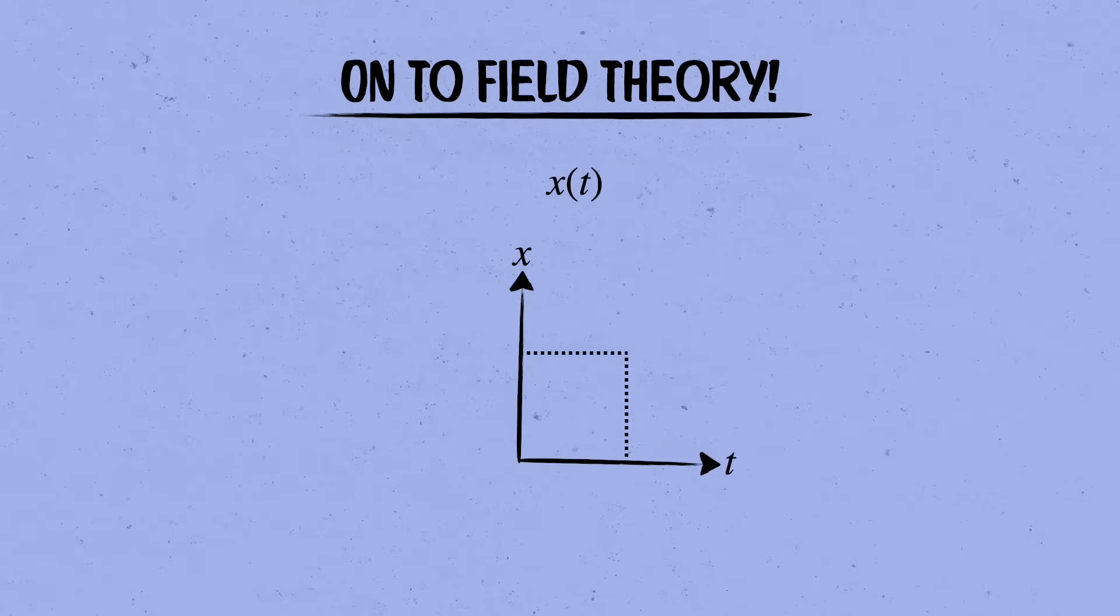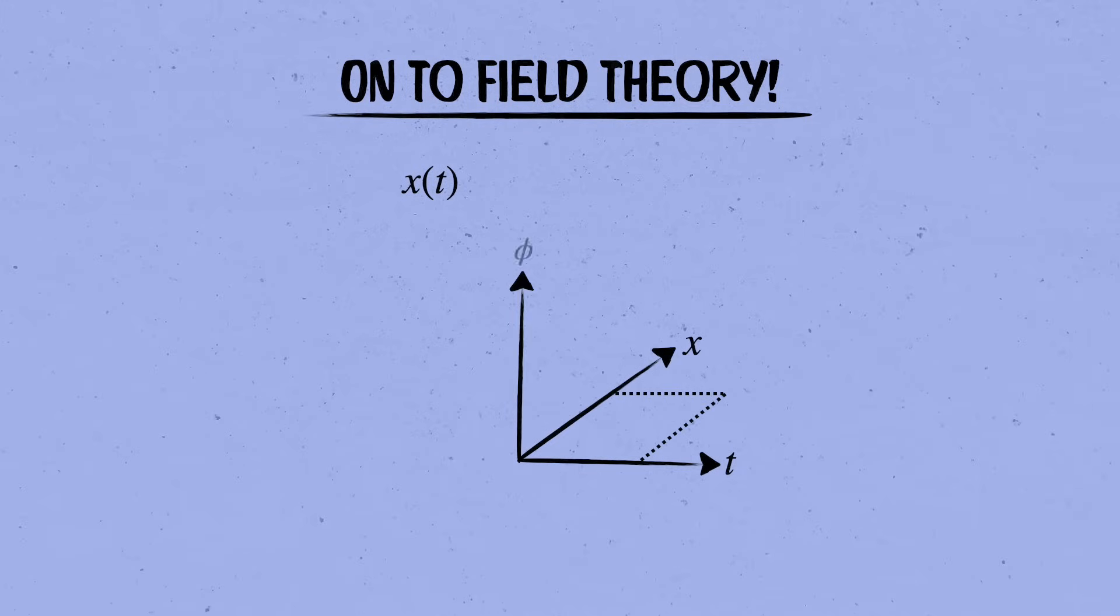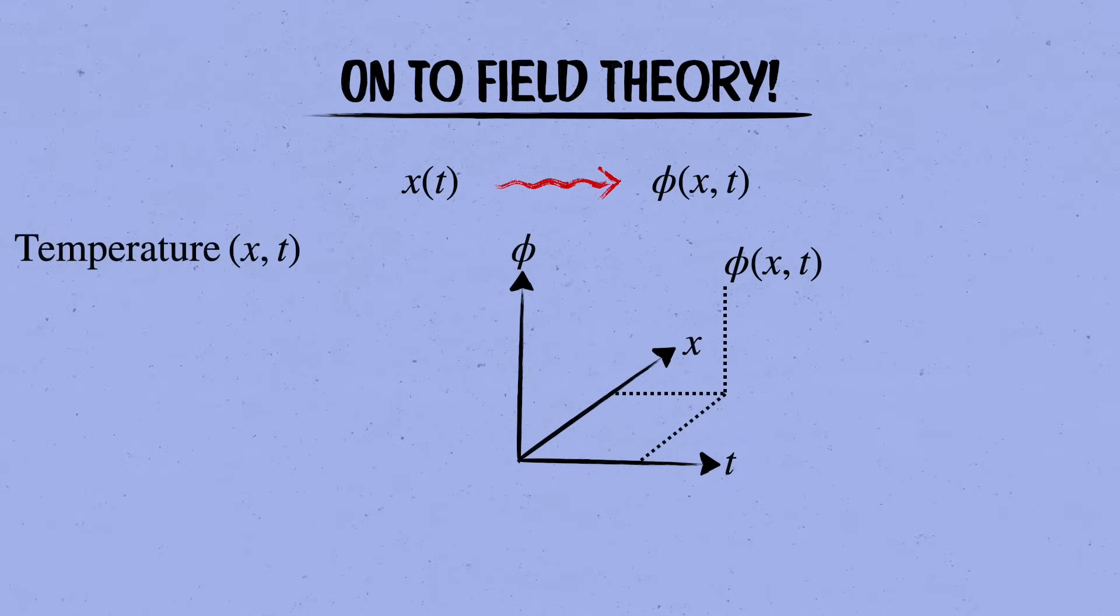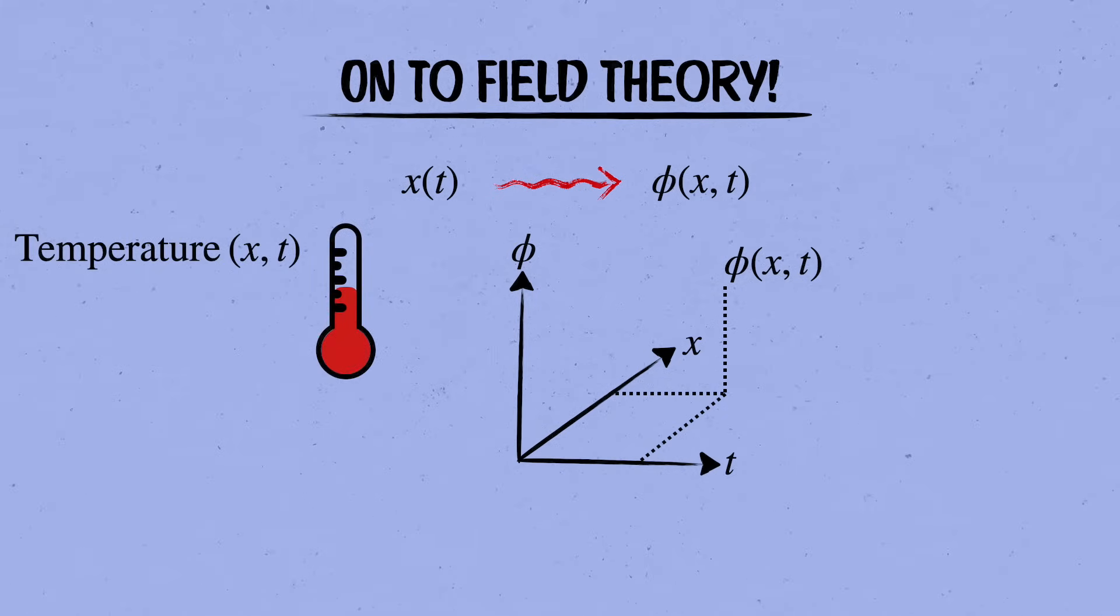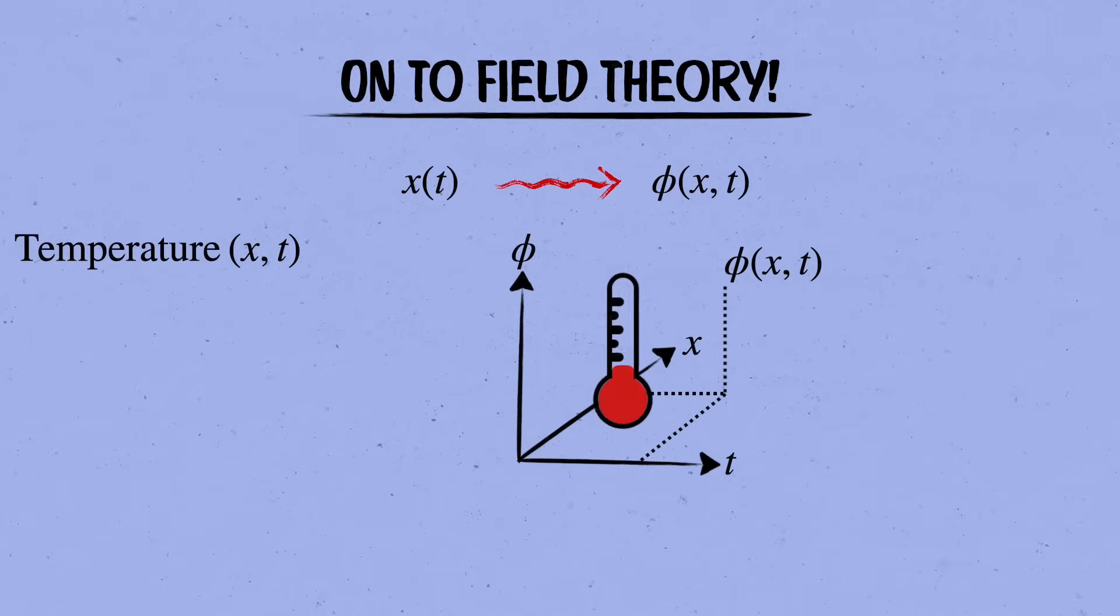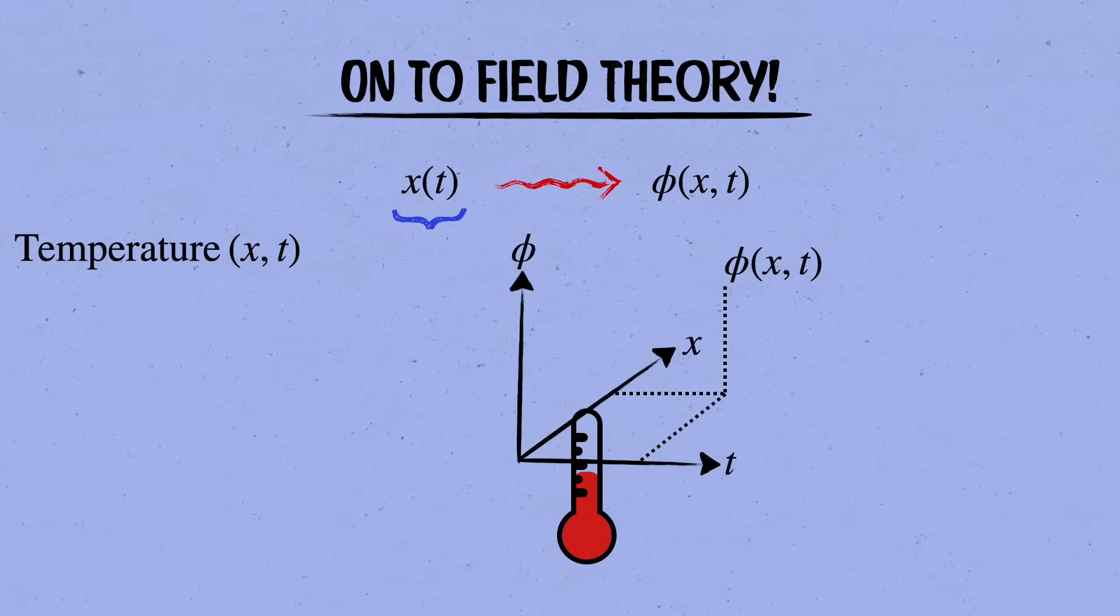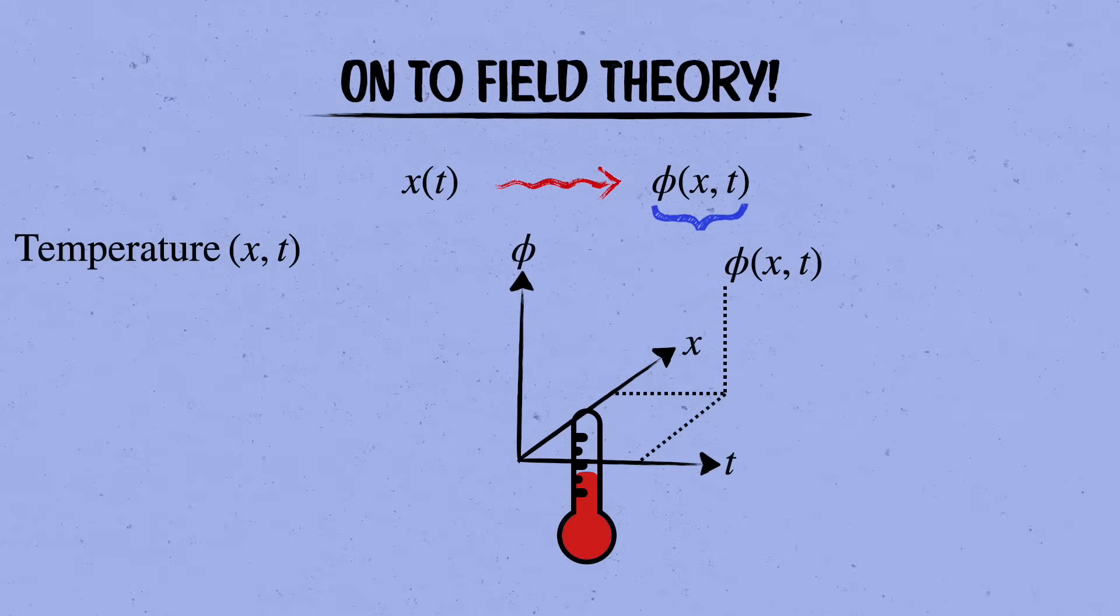In field theory, the central object is no longer the coordinate x of t of a particle, but a field phi that assigns a number to each point in space at each time. A simple example could be a temperature field that tells you the temperature at position x at any time t. It's a function that takes a point in space and time and gives you back a number. Instead of the single degree of freedom we had corresponding to the position x of the particle, we now have an infinite number of degrees of freedom for the field, one for each point in space. That means field theories are complicated, but they're commensurately powerful.